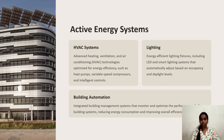Energy efficient lighting includes fixtures such as LED and smart lighting systems that automatically adjust based on occupancy and daylighting conditions. Building automation uses integrated building management systems that monitor and optimize the performance of building systems, reducing energy consumption and improving overall efficiency.